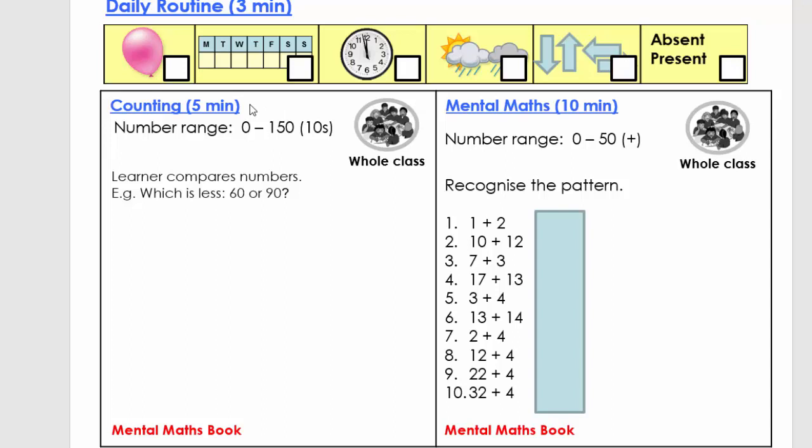Let's go to counting. What we're going to do is, which is less, 60 or 90? So let's count in 10. 10, 20, 30, 40, 50, 60, stop. So tell me which is less, 40 or 50? Excellent. So let's carry on. 60, 70, 80, 90, 100, stop.